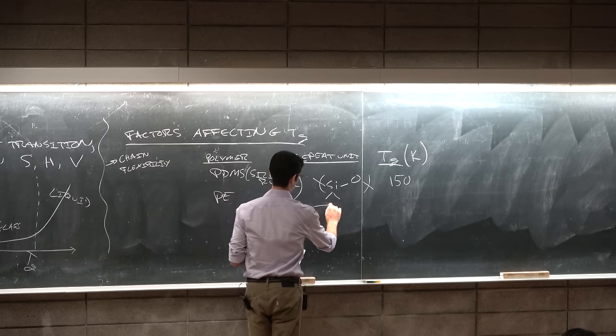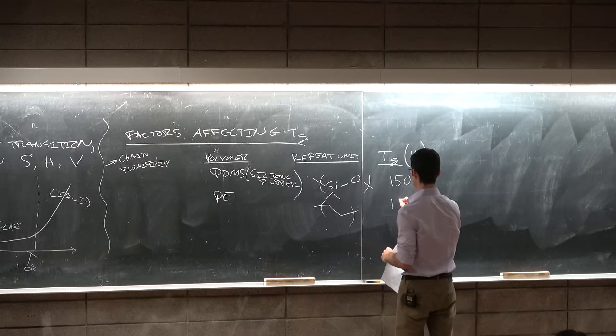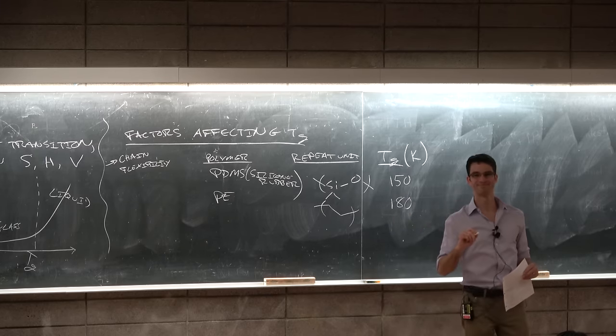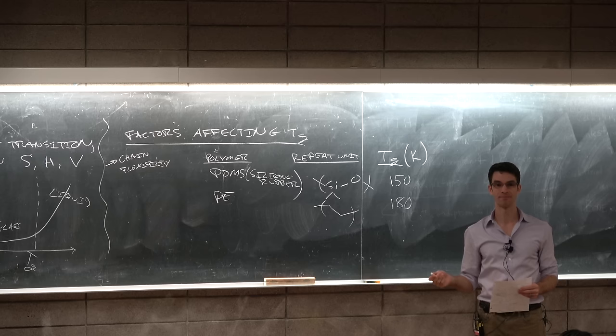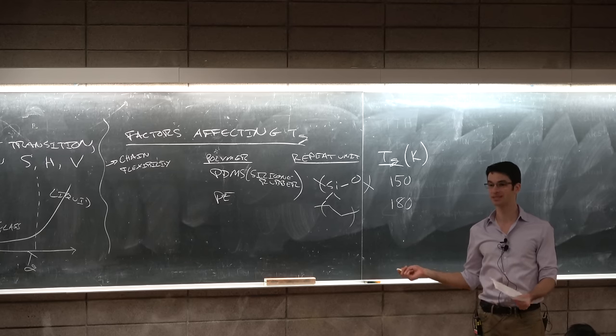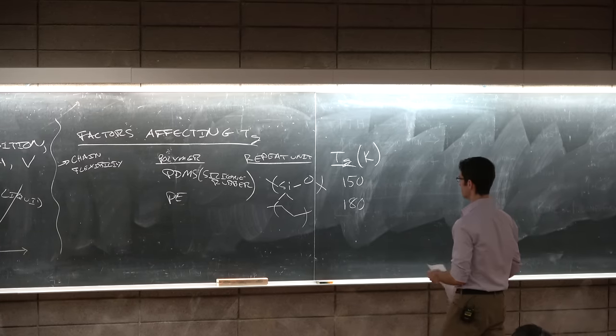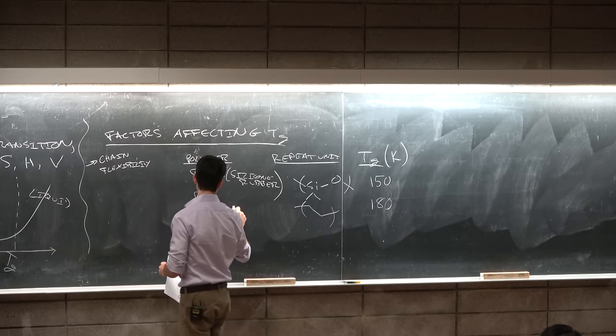That's why silicone before you cross-link it is liquid silicone. After you cross-link it, it's silicone rubber. Polyethylene is this. TG is 180, but I thought milk jugs were solid at room temperature which is 273K. Why is it still solid? Because it's semi-crystalline. It still has crystalline domains that keep it whole.